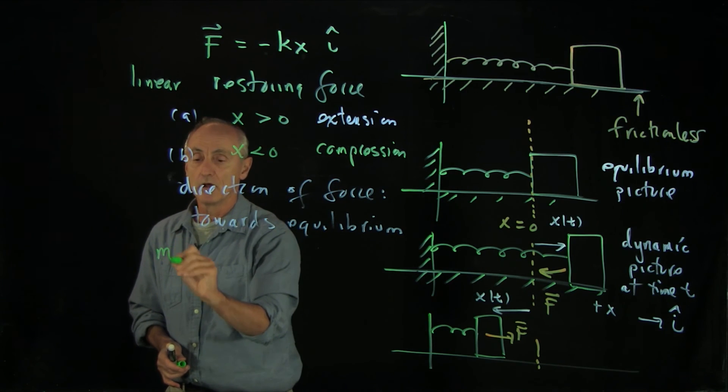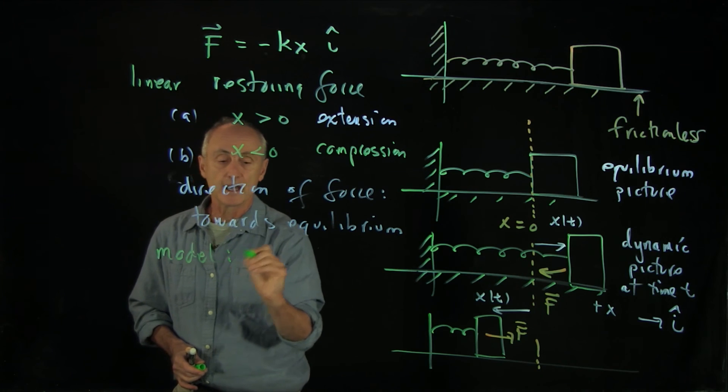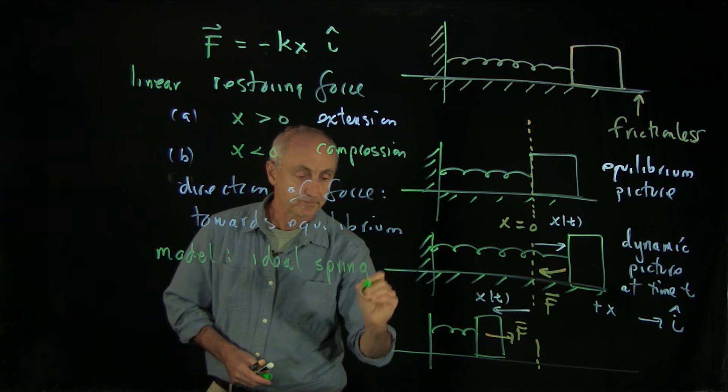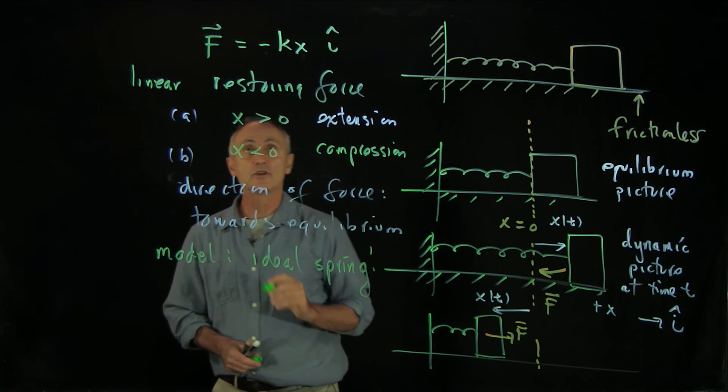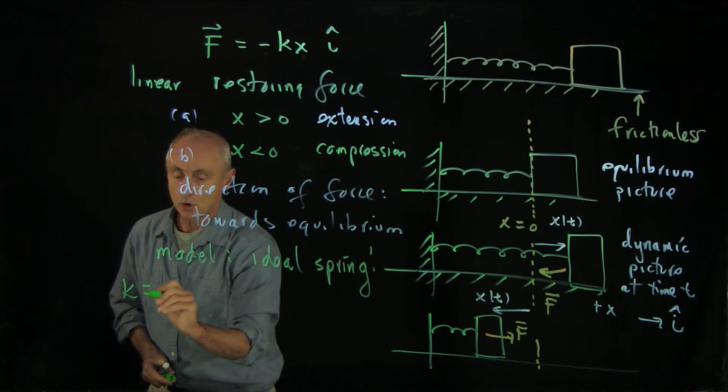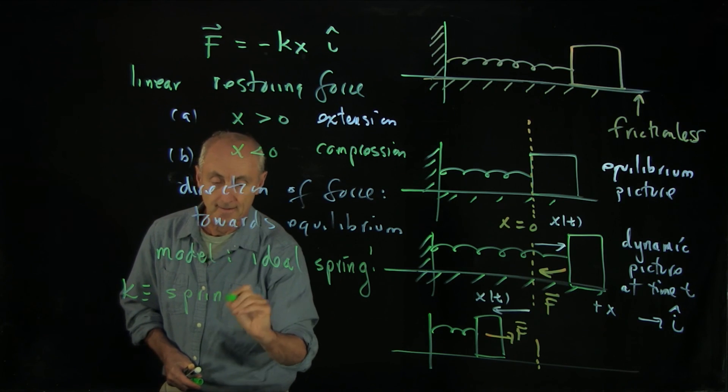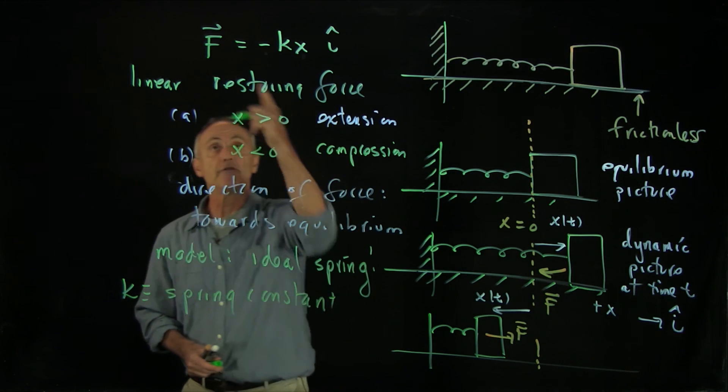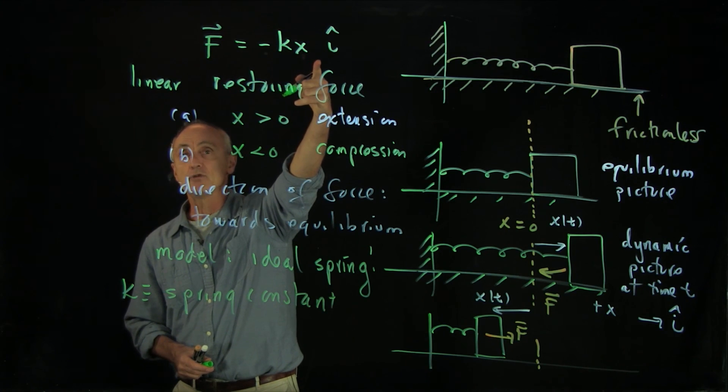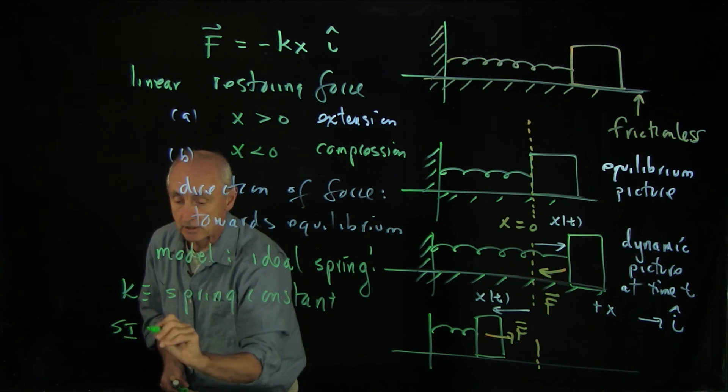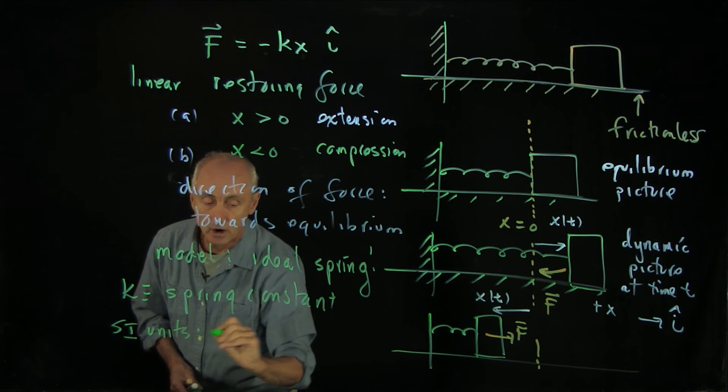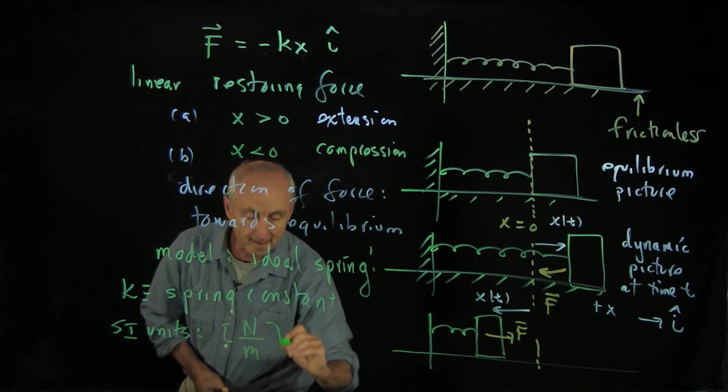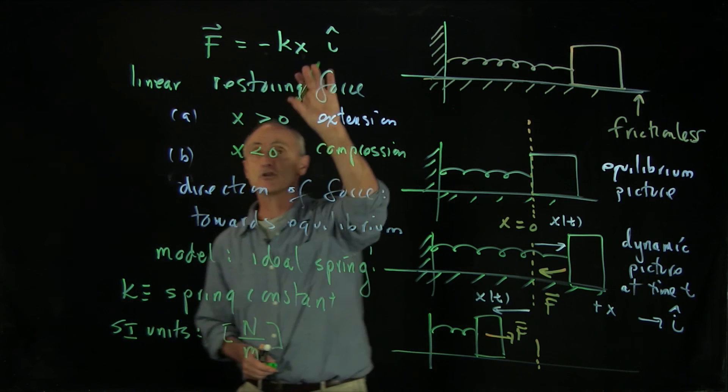And this is a model for an ideal spring. Now this constant k is called the spring constant. The units of the spring constant, if you divide the units of force by the units of distance, we have SI units are Newton over meters. That's the measure of the spring constant.